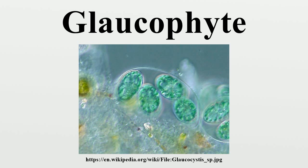Glaucocystis is non-motile, though it retains very short vestigial flagella, and has a cellulose wall. Cyanophora is motile and lacks a cell wall. Gloeochaete has both motile and immotile stages, and its cell wall does not appear to be composed of cellulose. Cyanotica is the least studied of the four genera. The Glaucophytes were previously considered part of the family Oocystaceae, in the order Chlorococcales.